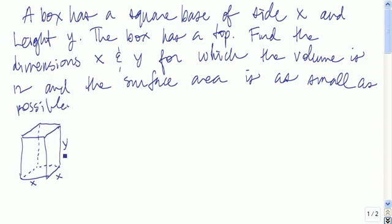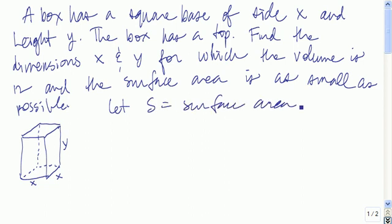The sides and height have already been assigned variables. The one that hasn't is the surface area, so let's let s equal the surface area. The next thing we want to do is write an equation for the quantity to be maximized or minimized. In this case, we want to minimize the surface area, so we want to write an equation for s.